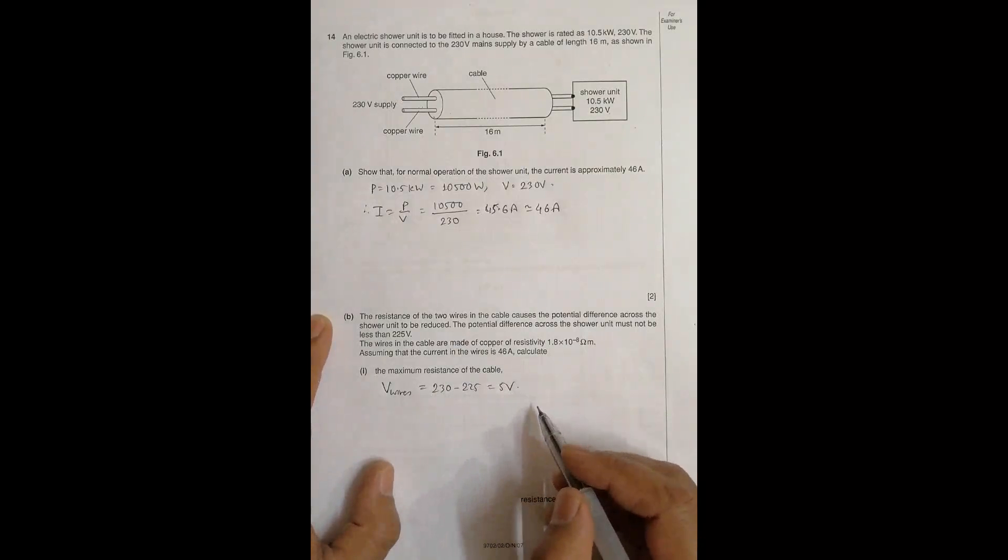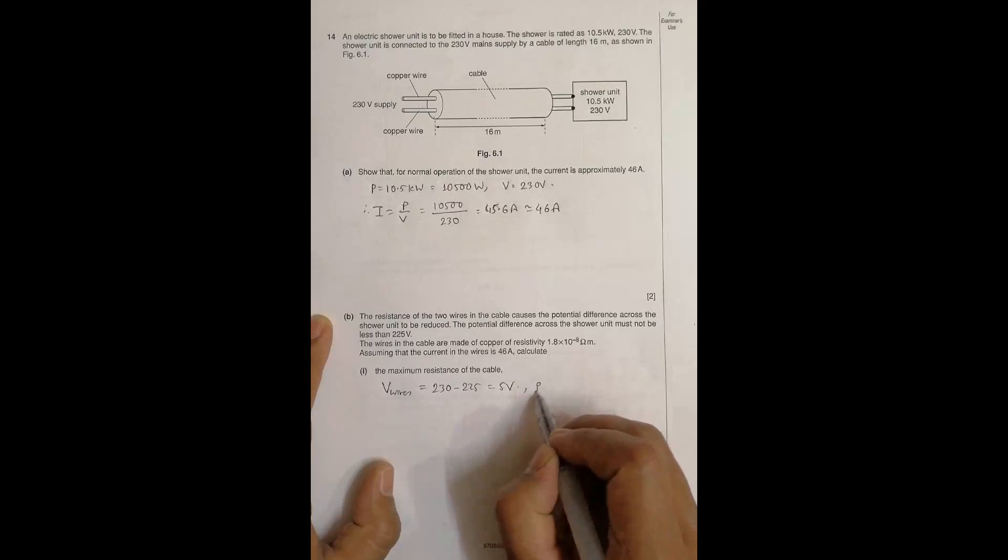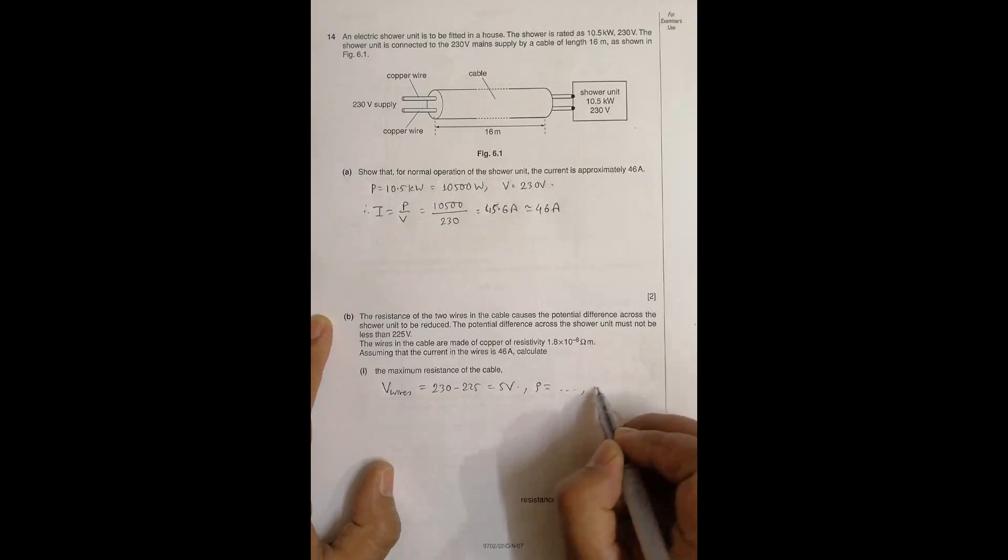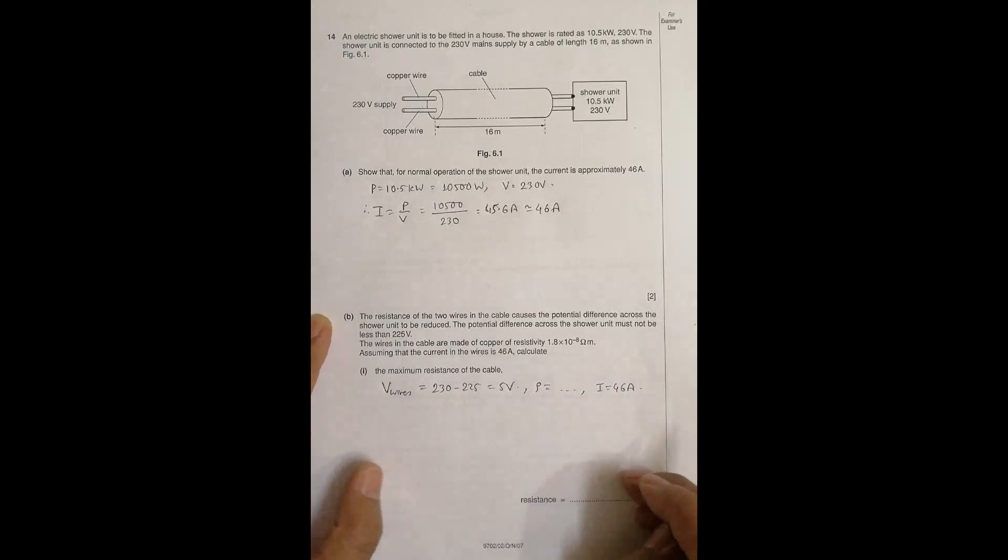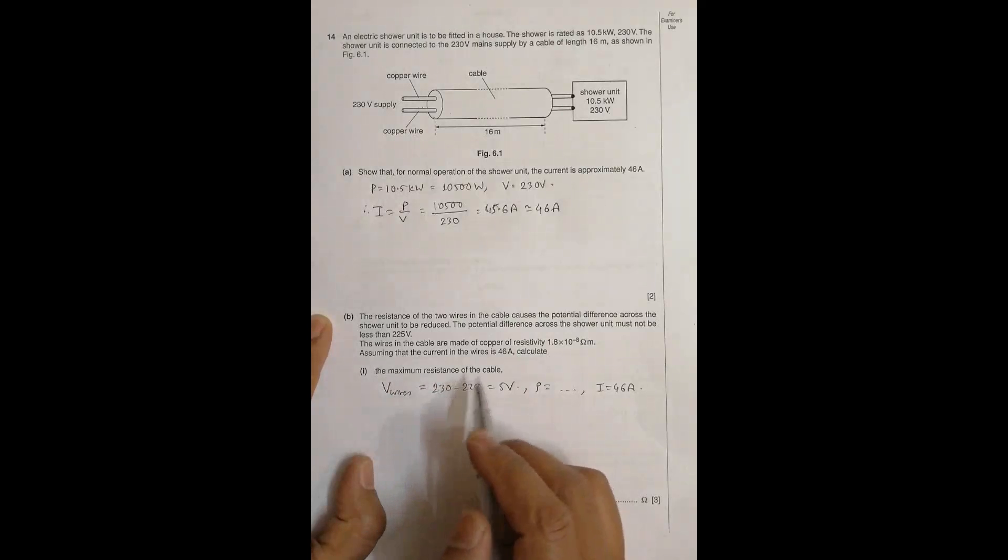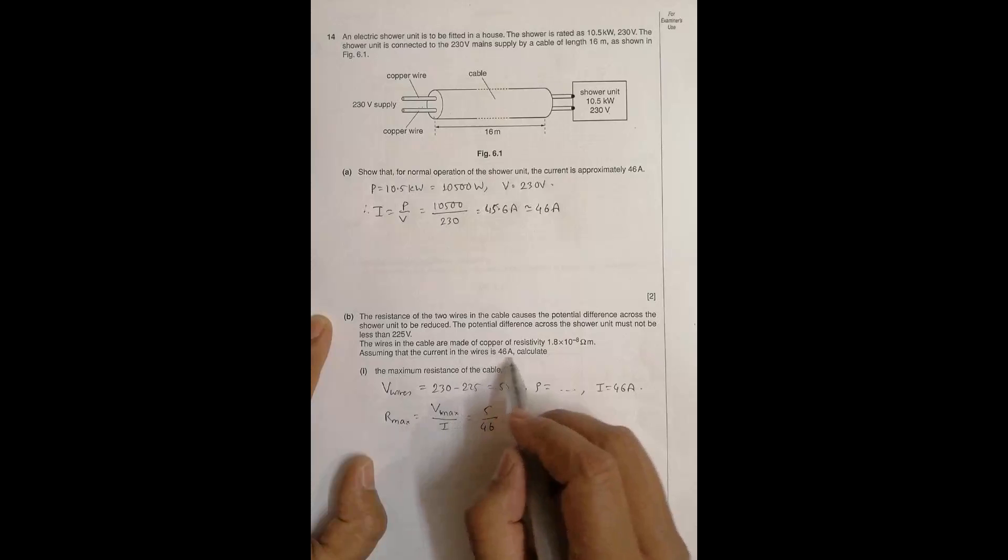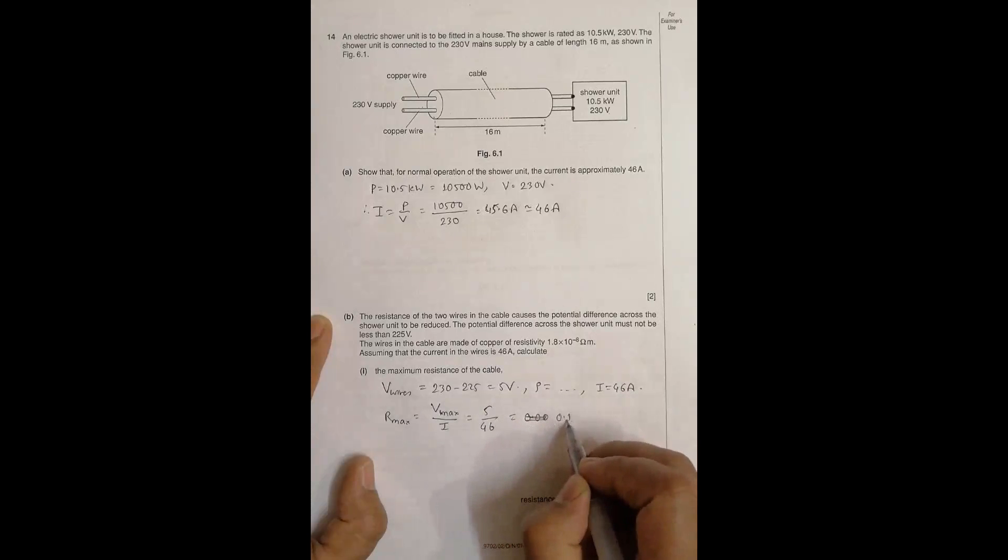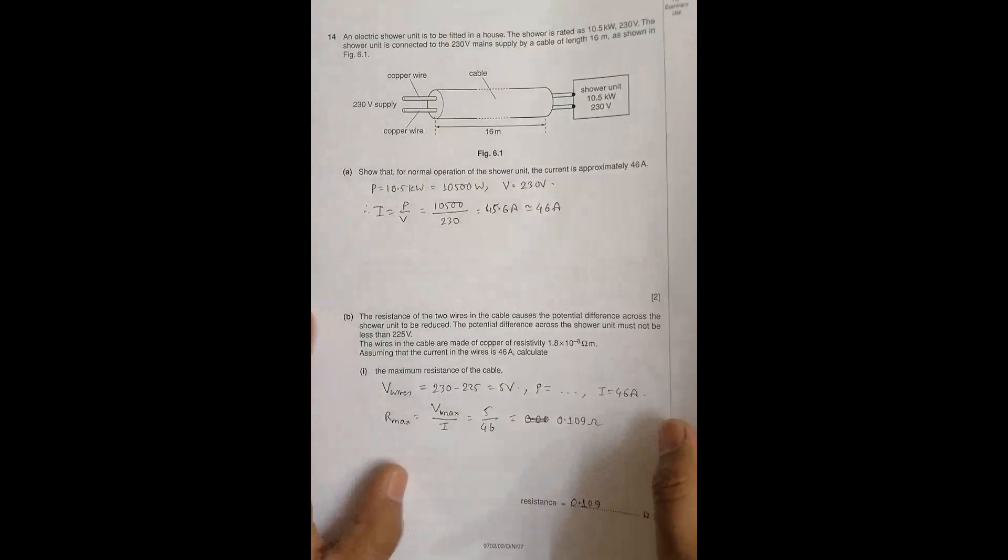We are given the resistivity and current is again I equals 46 ampere. We have to find the maximum allowed resistance of the cable. So R max should be equal to V max in the wires divided by the current, equal to 5 volt divided by 46. This gives 0.109 ohm. So the maximum resistance allowed is 0.109 ohm.